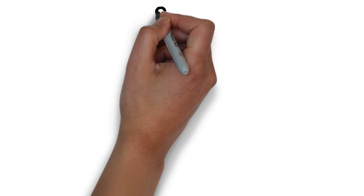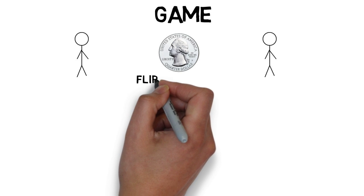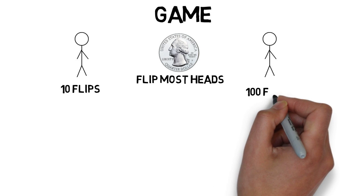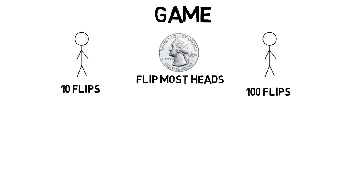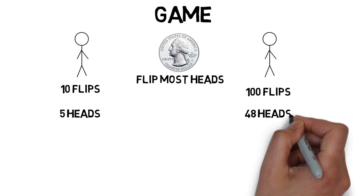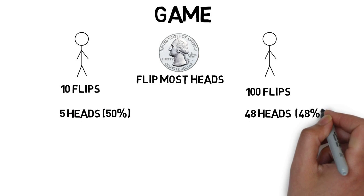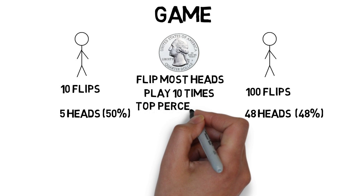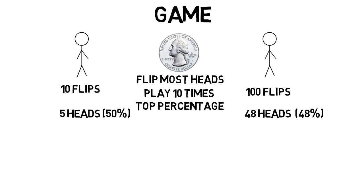Keep this in mind for the next part where we're going to play a game. You'll play against someone else for who can flip a coin and get heads the most. One of you will flip the coin 10 times and the other will flip it 100 times. It wouldn't be fair to count the sheer amount of heads, so we'll do percentages. We'll play 10 times — each person flips their respective amount for 10 trials, then we'll take the top percentage of all 10 trials for each person and whoever is highest wins.